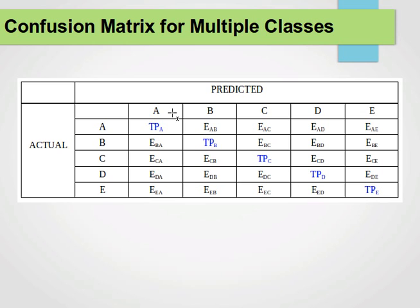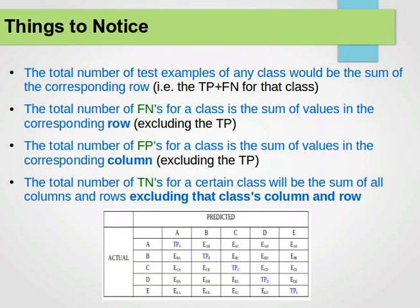We agreed that we're going to use the columns as our predicted classes — i.e. from our model — whereas the actual classes will be our rows. We mentioned that the diagonal values will be the true positives. Now, a few things to remember from the last video. This is the heart of the issue here, the heart of the transformation process. If we fully understand these points, then we can do the transformation quite easily.